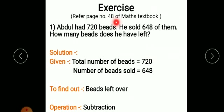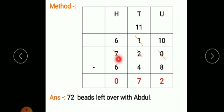Let us see the exercise on page 48 of the maths textbook. Abdul had 720 bits; he sold 648 of them. How many bits does he have left? Given: total number of bits 720, number of bits sold 648. To find out: bits left over. Operation: subtraction. Method: 720 minus 648. 0 minus 8 not possible — take borrow from 2; 0 became 10 and 2 became 1. 10 minus 8 is 2. 1 minus 4 not possible — take borrow from 7; 1 became 11 and 7 became 6. 11 minus 4 is 7. 6 minus 6 is 0. So 72 bits are left over with Abdul.